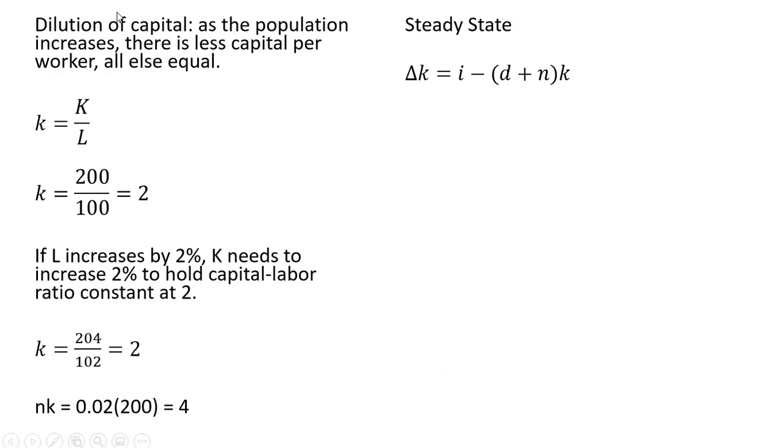So we can write the change in capital as follows: Δk = i - (d + n)k, investment less the depreciation cost and less the capital dilution. The steady-state requirement is the change in capital is zero.